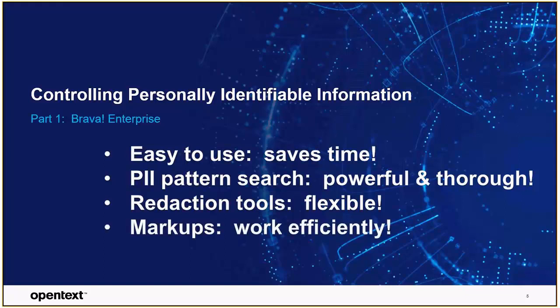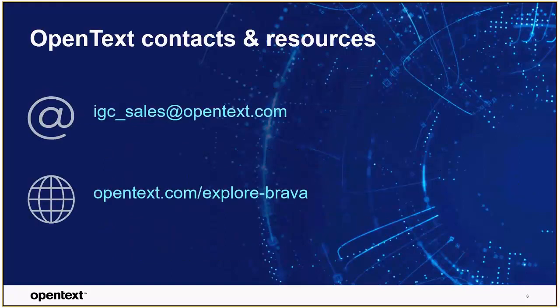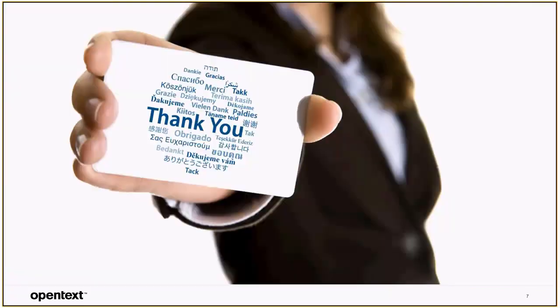You saw how I was able to save my redaction work so I could come back, make modifications if necessary, recheck my work, or let someone else recheck what was redacted. And the last part — I showed you that Brava's output of that redacted PDF truly redacts the underlying data; it's not just obscured. Brava gives me control over personally identifying information so I can comply with privacy policies and regulations and maintain the trust of my customers, in this case Mike and Julia. If you have questions about OpenText Brava, please email our sales team at IGC_sales@opentext.com or visit opentext.com/explore-brava. Thank you for watching part one of Controlling PII using Brava Enterprise.